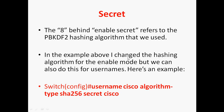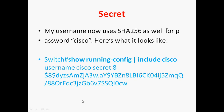In the example above, I changed the hashing algorithm for enable mode, but we can also do this for usernames. In global mode, the syntax is: 'username cisco algorithm-type sha256 secret cisco'. After configuring this, the username now also uses SHA-256 for the password. Running 'show running-config pipe include cisco' fetches that line and shows the SHA-256 encrypted key for the username and password.